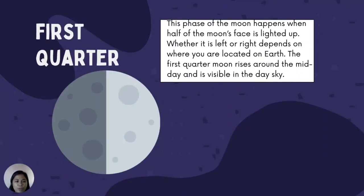First Quarter: This phase of the moon happens when half of the moon's face is lightened up. Whether it is left or right depends on where you are located on earth. The first quarter moon rises around midday and is visible in the daytime sky.